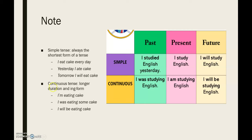If you take a look at the continuous tenses, they are always longer in duration, meaning that the period of time you're talking about always lasts longer than just a small moment in time. And they always use the -ing form. As you can see here: eating cake, I was eating cake, or I will be eating cake. And they will always use an auxiliary verb — there is always another verb used.